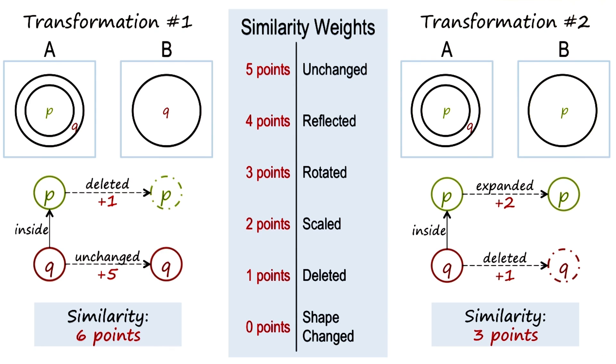In case of transformation number two, the weight of P being expanded, we said will be two, scaled, and Q getting deleted is one, so the total weight is three. If you prefer the first transformation over the second transformation, then we can see why someone will answer the square as the correct answer and not the triangle.